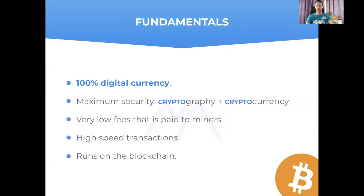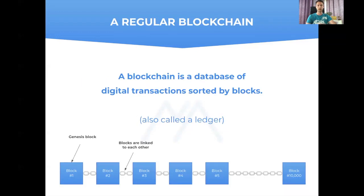The last piece of information is that cryptocurrencies run on what is called the blockchain. You may have heard about it — the blockchain is a technology, and we're going to check in the next slide what this technology is. The blockchain is simply a database of digital transactions that are sorted by block.